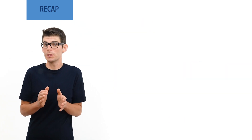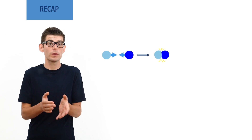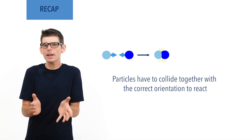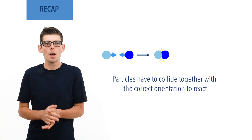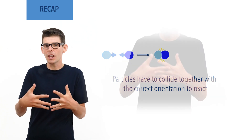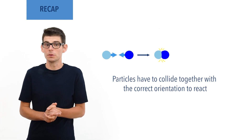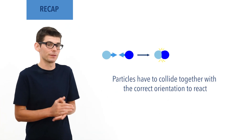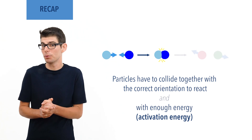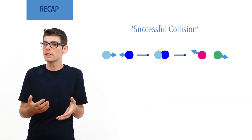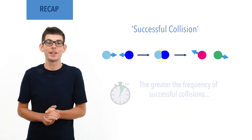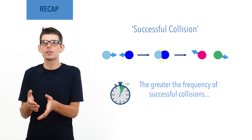In order for a reaction between two substances to occur, particles of each must collide together with the correct orientation. By correct orientation, we just mean they have to hit each other at the right angle, a bit like your hands have to collide in the right way to fit together. If one of these collisions between particles happens with enough energy — activation energy — and leads to the formation of new products, the collision is described as successful. The greater the frequency of these successful collisions occurring during a reaction, the faster its rate.